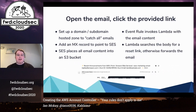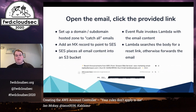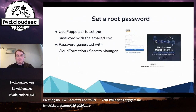We have to open the email and click the provided link. To do this, we set up a domain or subdomain as a Route 53 hosted zone to catch all the emails. We add an MX record to point to SES inbound. We have SES place all the email content in an S3 bucket. We have an event rule that invokes the Lambda with the email content, and the Lambda reads that body. If the body does not contain a reset link, it'll just forward it off to the account owner or to the master email. If it does contain the reset link, we go to the next step — setting a root password. Again, we need to use Puppeteer to set the password with that emailed link. The password is generated by CloudFormation and stored in Secrets Manager, so you never actually have to know or write down that password.